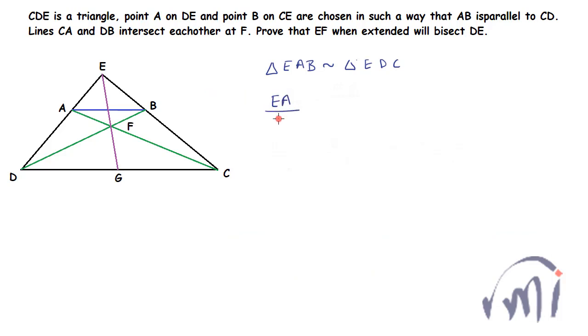You can say EA divided by ED is equal to EB divided by EC. Or if I inverse both sides, ED divided by EA will be equal to EC divided by EB. And now if I subtract 1 from both sides, I'll get ED minus EA divided by EA is equal to EC minus EB divided by EB.